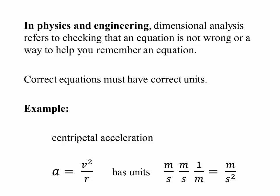So, for example, centripetal acceleration is v squared over r. And that is not wrong because v squared is meters per second times meters per second divided by meters gives you meters per second squared. So that formula has the right units. And a lot of other things you might guess for that formula would have the wrong units.